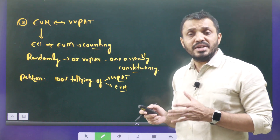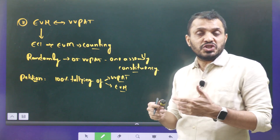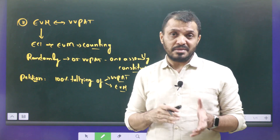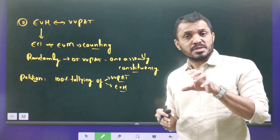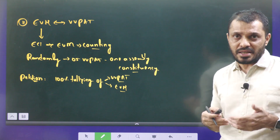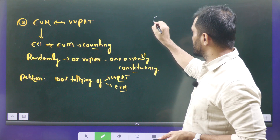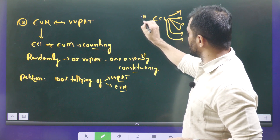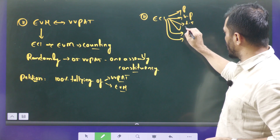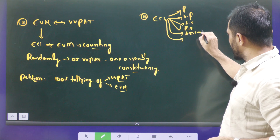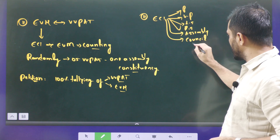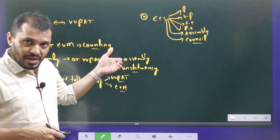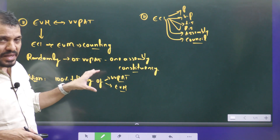We introduced the concept of VVPAT to improve efficiency in democracy and to give more confidence to voters that their votes are cast in the right manner. In a democracy, elections play a very important role — people get a chance to elect their representatives. Election Commission of India conducts elections to various democratic institutions: President, Vice President, Lok Sabha, Rajya Sabha, Assembly, and Council. As part of improving transparency, VVPATs were introduced.